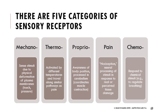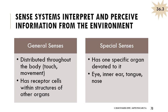Chemoreceptors are important for responding to chemical stimuli, like sensing changes in carbon dioxide levels when we're breathing - they sense carbon dioxide as carbonic acid and bicarbonate in our bloodstream so we know how to regulate breathing. There are two categories of senses: general senses where receptors are distributed throughout the body - like touch or movement - and special senses where one specific organ is devoted to them. Special senses include vision accomplished with the eyes, hearing with the inner ear, and taste.